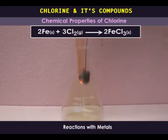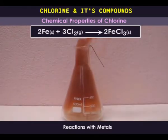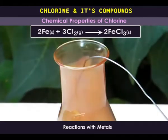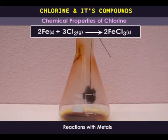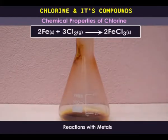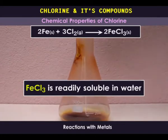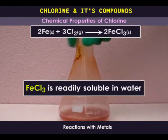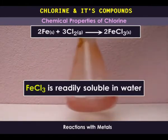Note that when the metal exhibits more than one valency, the chloride of the higher valence is formed. That is why we get iron-3 chloride and not iron-2 chloride. The brown crystals of iron-3 chloride are readily soluble in water. In fact, iron-3 chloride is highly deliquescent and absorbs water from air to form a solution.